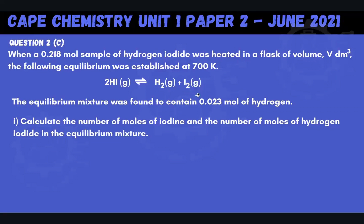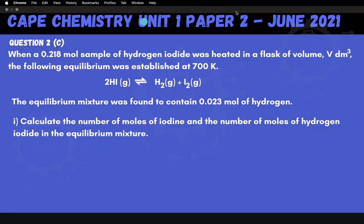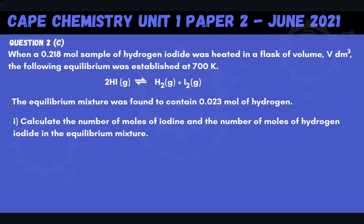The equilibrium mixture was found to contain 0.023 moles of hydrogen. We have to calculate the number of moles of iodine and the number of moles of hydrogen iodide in the equilibrium mixture. In order to do this, we're going to have to set up our ICE table.